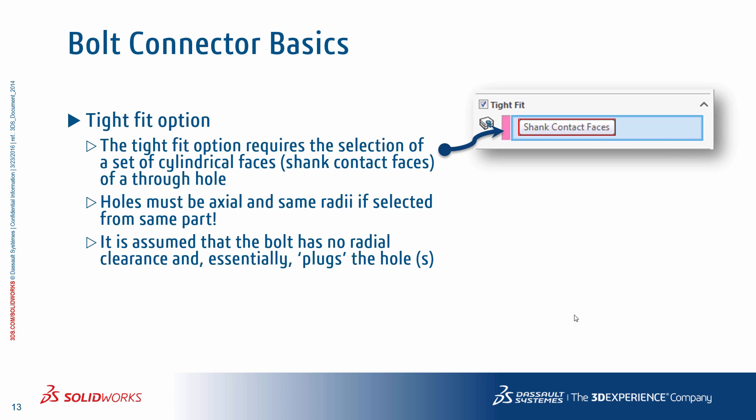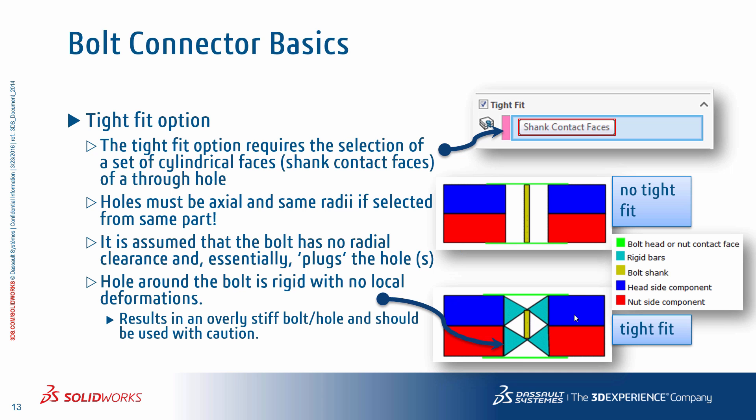The tight fit option assumption is that the bolt has no radial clearance and plugs the holes. Keep in mind that the through hole faces we're talking about are not the threaded faces but the faces that touch the unthreaded portion of the bolt shank. This image illustrates what a tight fit and without-a-tight-fit formulation looks like.